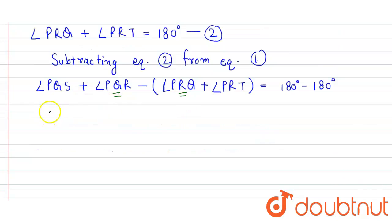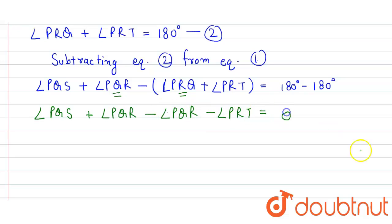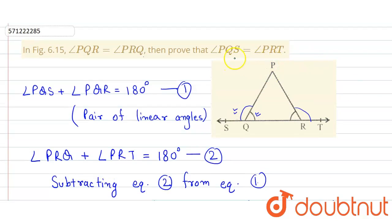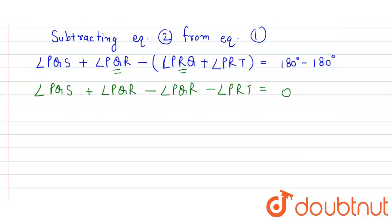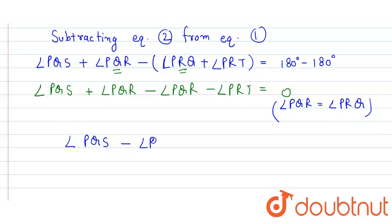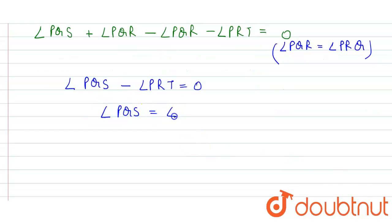Since angle PQR equals angle PRQ, we have angle PQS plus angle PQR minus angle PQR minus angle PRT equals zero. The terms angle PQR minus angle PQR equal zero, giving us angle PQS is equal to angle PRT. Hence proved.